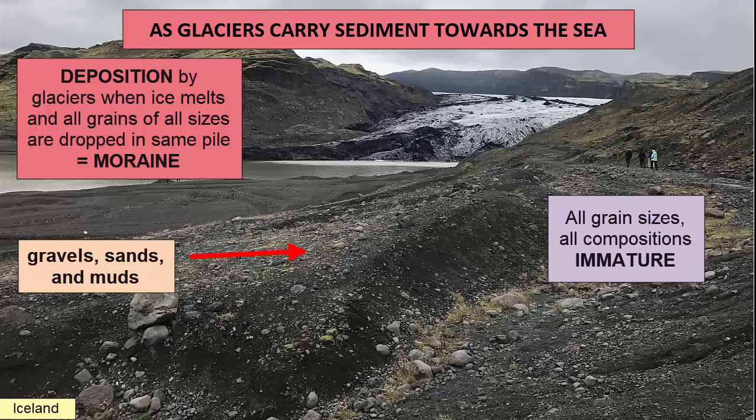When sediments are transported by glaciers, they are trapped in the ice at the base of the glacier, and so don't knock about so much or weather. Glacial deposits, known as moraines, form when glaciers melt and leave the sediment they carried behind in one big pile of unsorted, angular grains of all sizes — very different from river-deposited sediment.